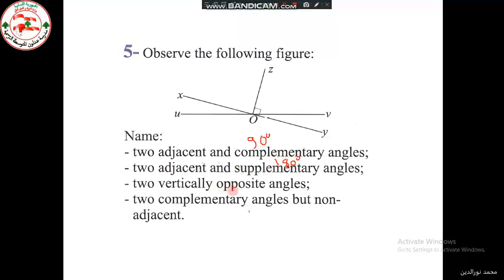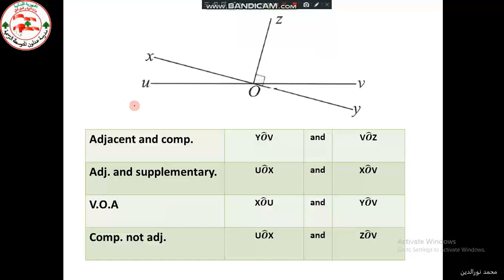We also need to find two vertically opposite angles, and two complementary angles that are not adjacent. First, let's find adjacent and complementary. Complementary means 90 degrees. Adjacent means the angles have a common vertex, a common side, and the angles lie on either side of the common side — like this. In that case, we say they are adjacent.